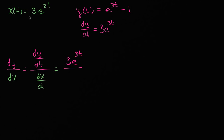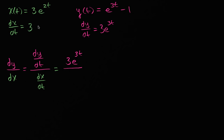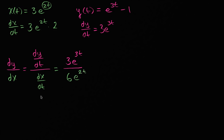All of that over — what's the derivative of x with respect to t? The derivative of x with respect to t: we have the three out front, and the derivative of e to the 2t with respect to 2t is e to the 2t, then we take the derivative of 2t with respect to t, which is just two. So this is going to be six e to the 2t.